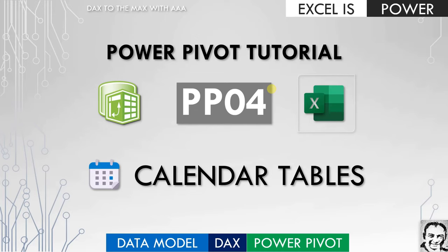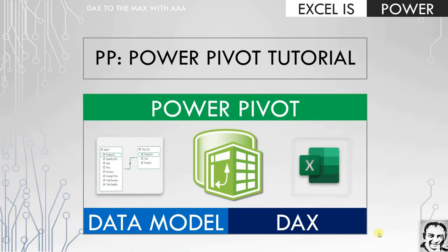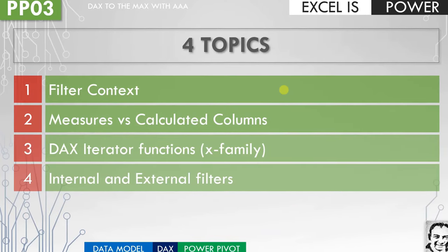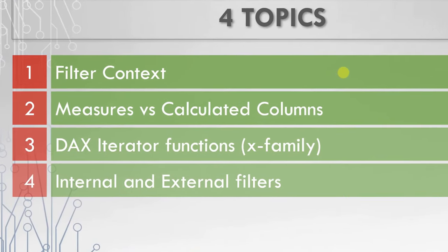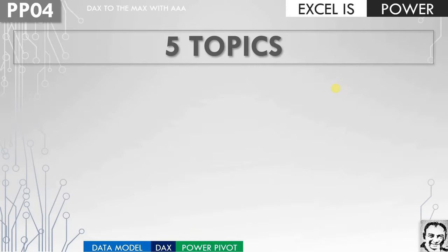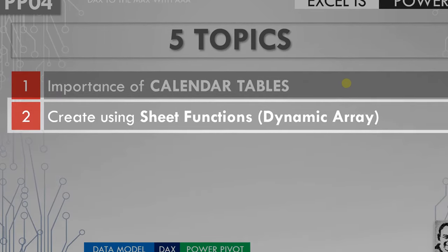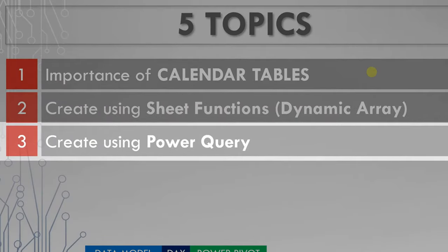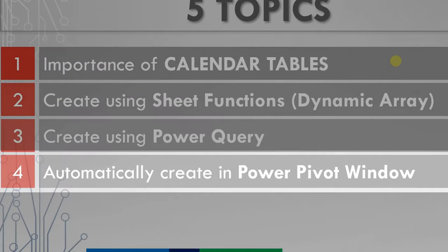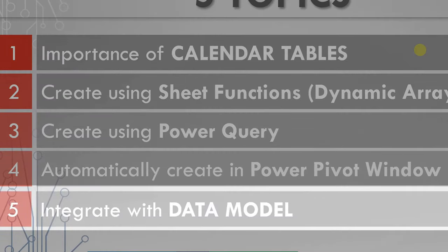If you want to understand the importance of calendar tables in a data model and learn different ways to create one, please watch this video till the end. In the previous video PP03, we discussed filter context, measures and calculated columns, DAX iterator functions, and internal and external filters. In this video, we are going to discuss five topics: the importance of calendar tables, how to create one using the sheet function with dynamic array functions, how to create one using Power Query, how to create one automatically inside the Power Pivot window, and finally how to integrate your calendar table inside the data model.